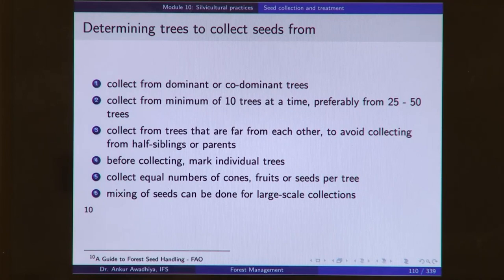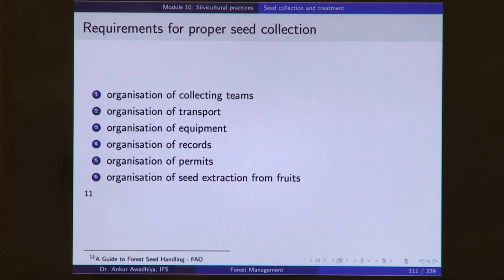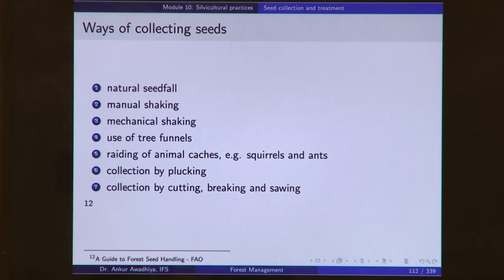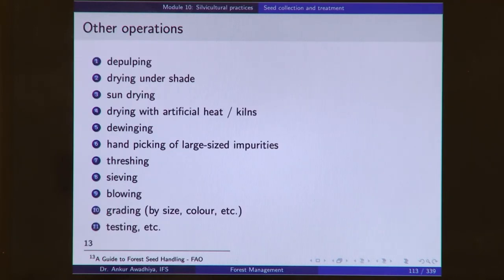For a proper seed collection, you need to organize collecting trees, transportation, equipment, records, permits, and seed extraction — because as soon as seeds are collected, they have to be processed. Ways of collecting seeds include natural seed fall, manual shaking, mechanical shaking, use of tree funnels, raiding of animal caches including squirrels and ants, collection by plucking, and collection by cutting, breaking, and sawing. Other operations include de-pulping, drying under shade, sun drying, drying with artificial heat or kilns, de-winging of seeds, hand picking of large impurities, threshing, sieving, blowing, grading, testing, and so on.